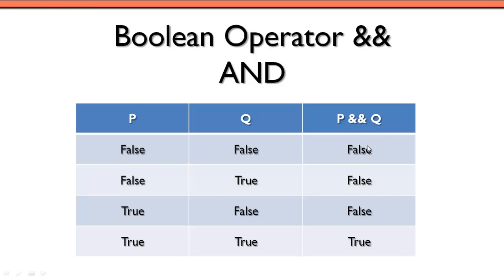So we have false and false results in a false, false and true results in a false, and true and false results in a false, and then finally true and true results in a true.